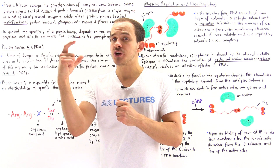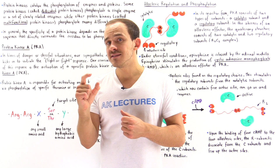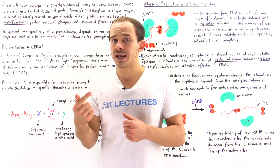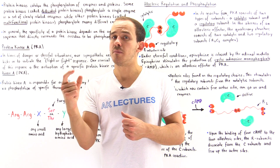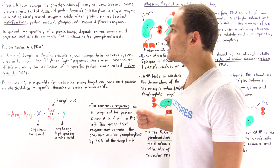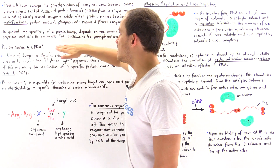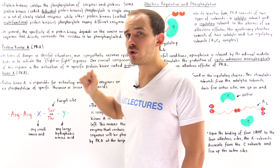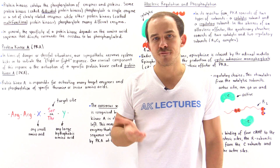To have a high affinity between the substrate molecule and the protein kinase, the sequence of amino acids around the amino acid which is about to be phosphorylated has to be correct. If the sequence of amino acids on the substrate molecule is not correct, the active site will not be able to bind onto that substrate molecule. We conclude that the specificity of protein kinases depends on the amino acid sequence that directly surrounds the target residue that is about to be phosphorylated.